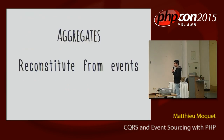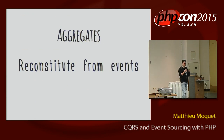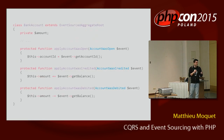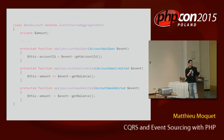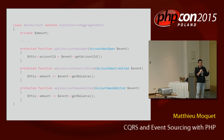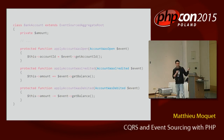You also need to reconstitute the model from past events. So for each event, you trigger some operation. For example, when there's a credit event, I add some money to my local attribute. When there's a debit, I remove some money. Pretty simple example.